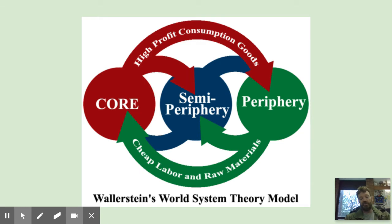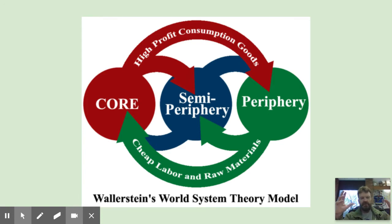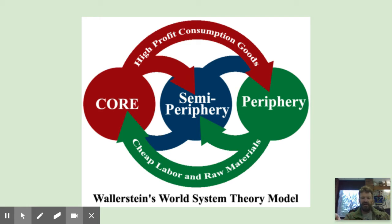Here's Wallerstein's World Systems Theory model. It's really important that you understand this. There's the core, and the core utilizes the periphery and the semi-periphery countries. The periphery countries are typically the less developed countries — they provide cheap labor and raw materials to the core countries.